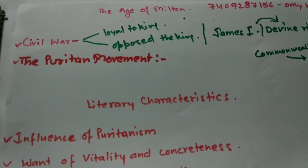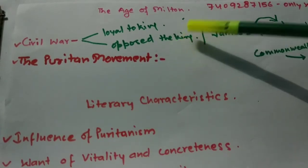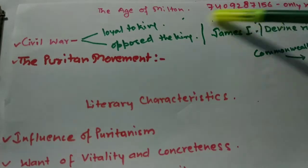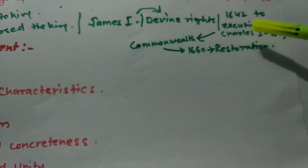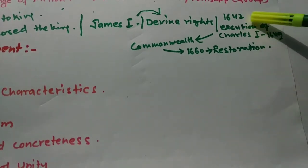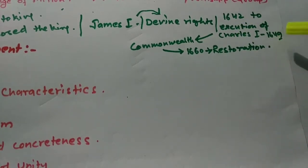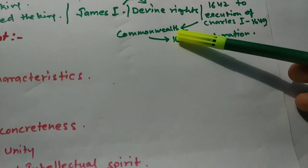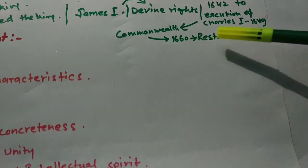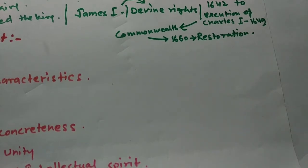We should understand that at that time the British Empire had two fractions. This was the cause and main reason for the civil war. It started in 1642 and ended with the execution of Charles the First in 1649. After 1649, it became a Commonwealth, and in 1660 there was a restoration of the monarchy.